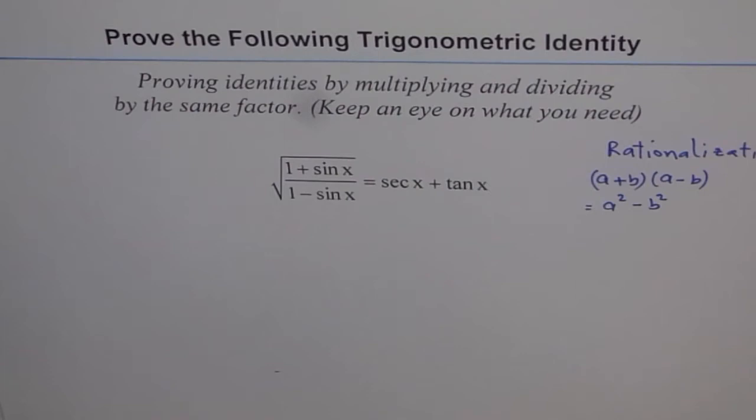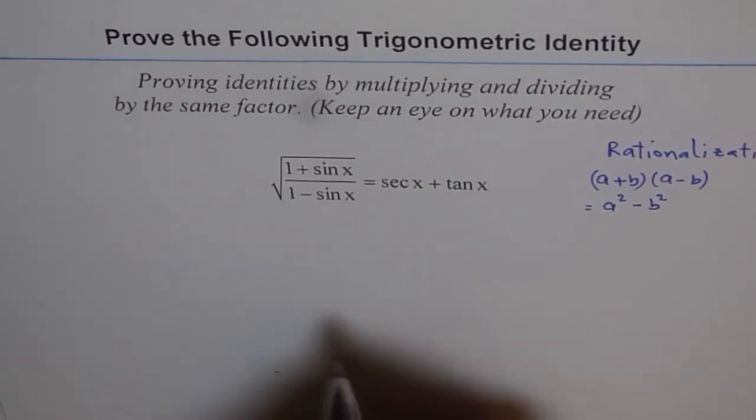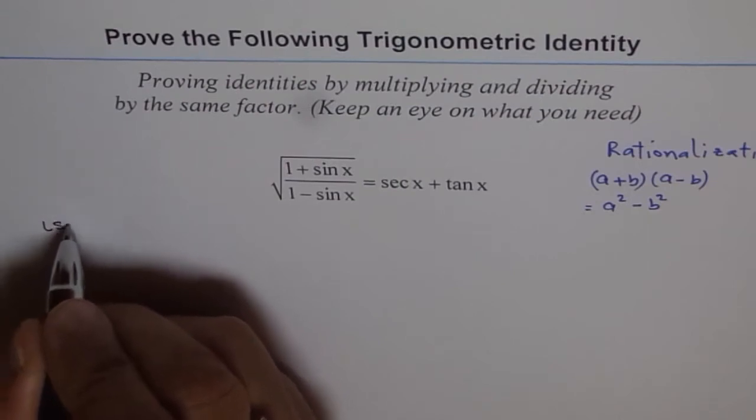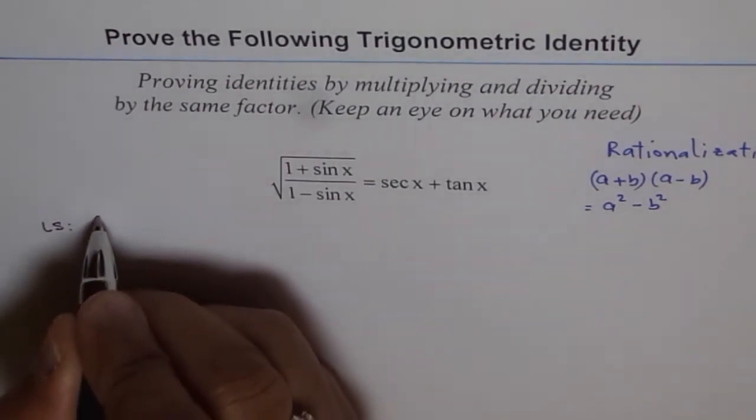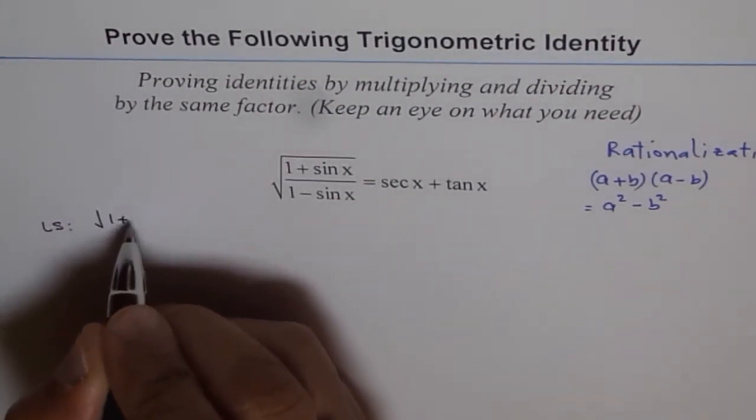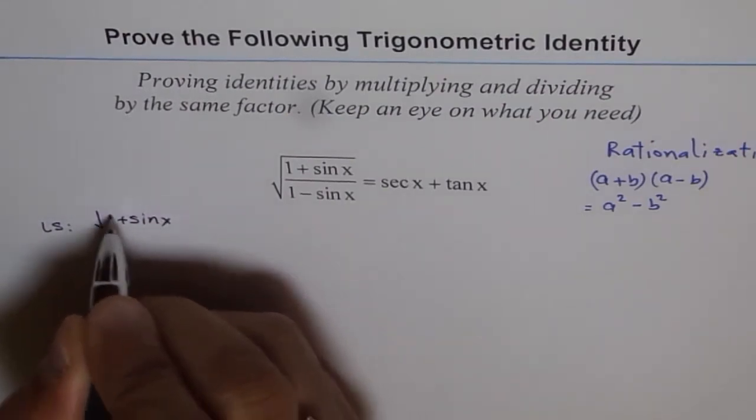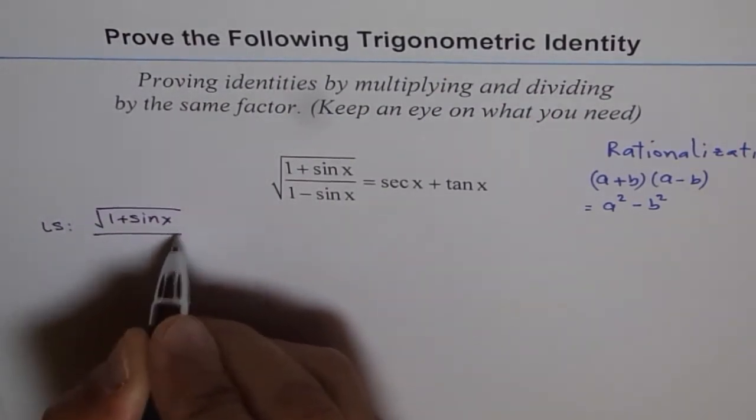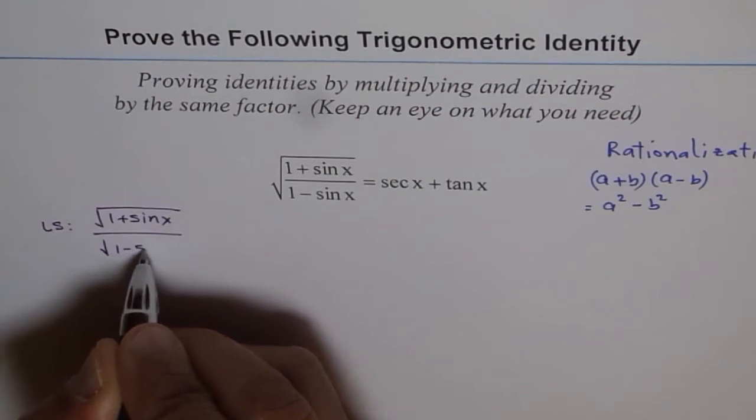So let's see how to use this technique in this particular case. Let's start with the left side. We have left side which is equal to square root of 1 plus sin x divided by square root of 1 minus sin x.